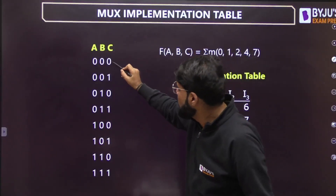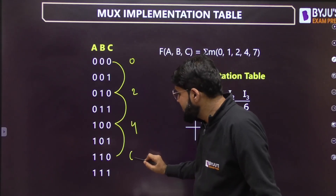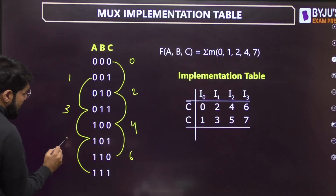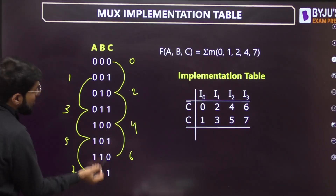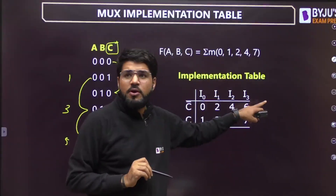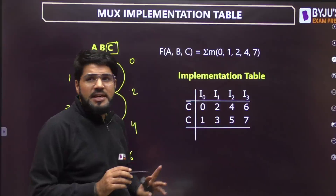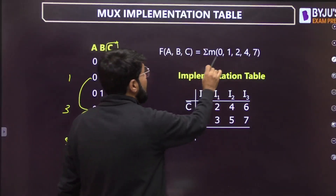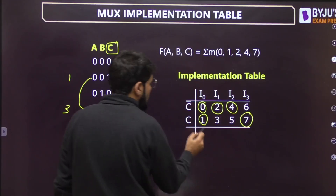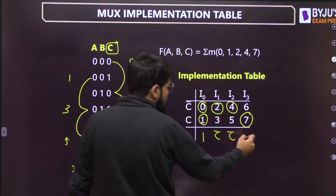Once again look into the 8 combinations. C-bar means C should be 0 — those are the alternate cases: 0, 2, 4, 6 in decimal. C high corresponds to 1, 3, 5, 7. So in this implementation table, C-bar row covers 0, 2, 4, 6 and C row covers 1, 3, 5, 7. Now highlight the minterms 0, 1, 2, 4, 7 and write down your answers.